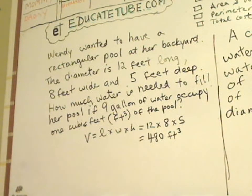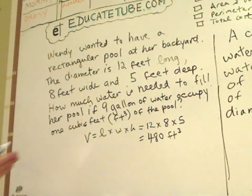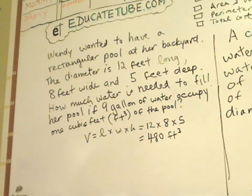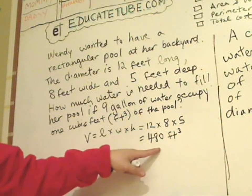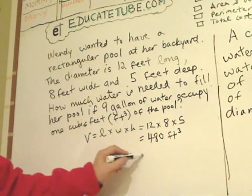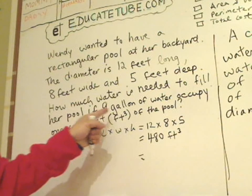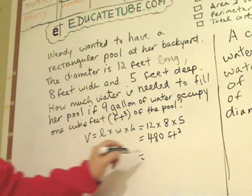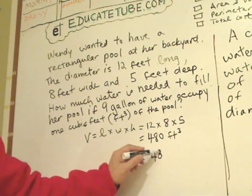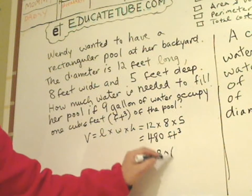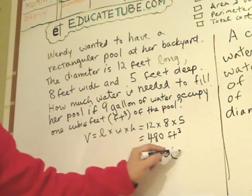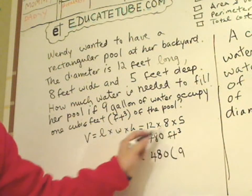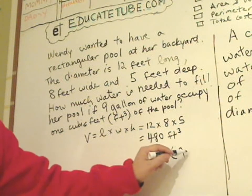Alright, now that's not really the answer that we wanted because really what you want to know is how much water is needed to fill her pool if 9 gallons of water occupy 1 cubic feet. Now notice we have 480 cubic feet. So we know that 9 gallons occupy 1 cubic feet. So all we need to do is now take that cubic feet and convert that into 9 gallons. Just replace 1 cubic feet into 9 gallons of water.